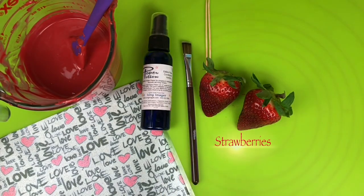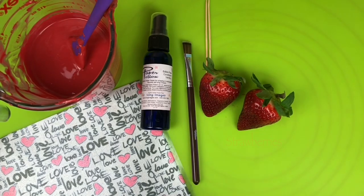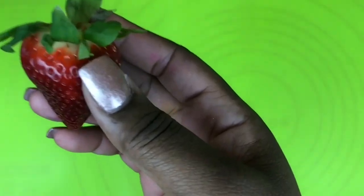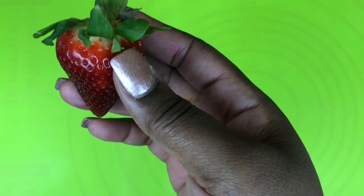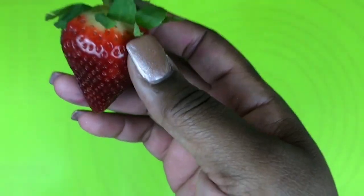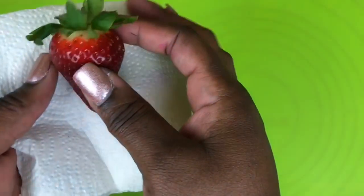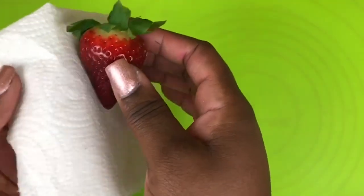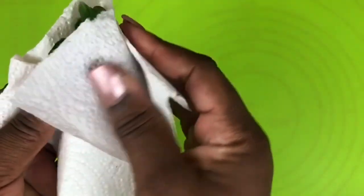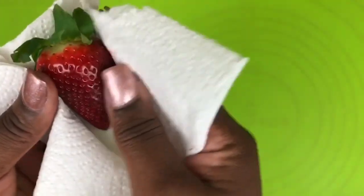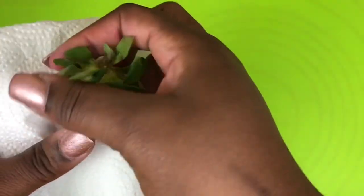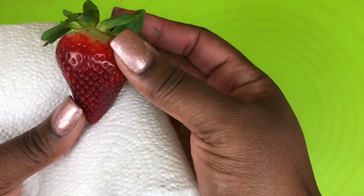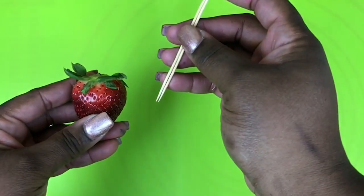I'll also be using my brush, toothpicks, and strawberries. You want to make sure your strawberries are completely clean, removed any dead leaves that are on your strawberries. If you want more information on how to clean your strawberries check out my other videos listed on my channel. After you dry, make sure that your strawberries are completely dry by using a paper towel and dry them off very well.